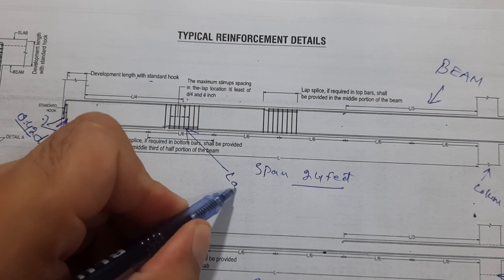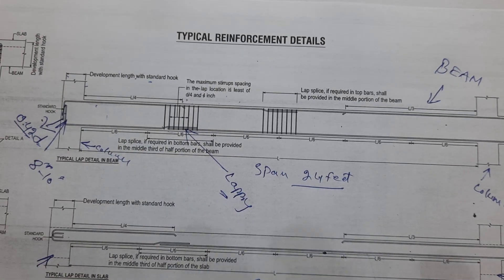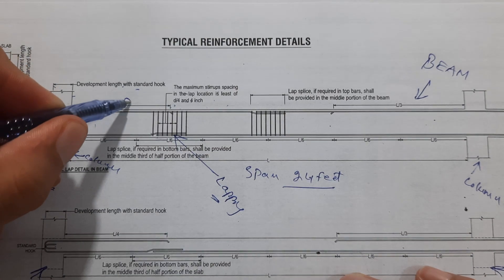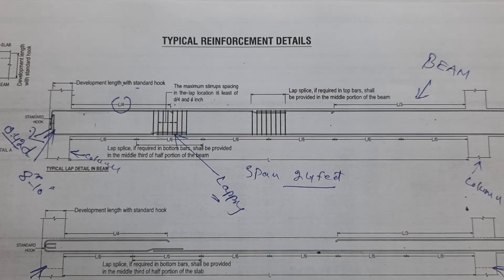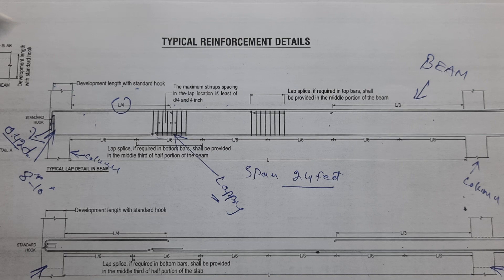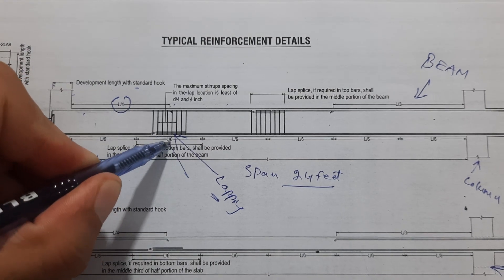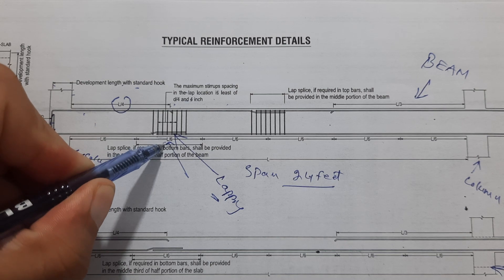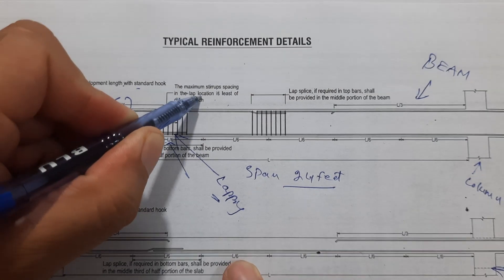This is called lapping. Lapping is not allowed to be provided at the distance of l/4, because we have a negative bending moment there. Therefore, lapping is allowed to be provided at the distance of l/6. You can see that clearly, and here the spacing of the stirrups should be up to 4 inches, not more than this.